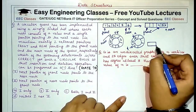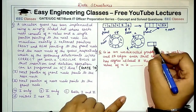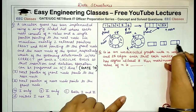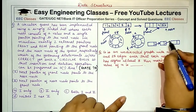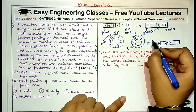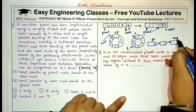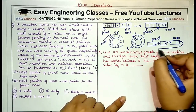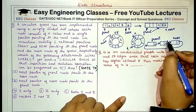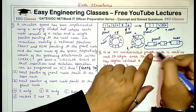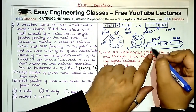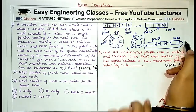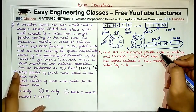In a circular queue implemented using a singly linked list — where each node contains a value and a pointer to the next node — if this is the front and this is the rear, we must maintain a pointer from the rear to the front node to form a circular linked list, so that a circular queue is possible.